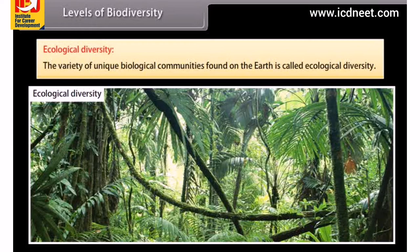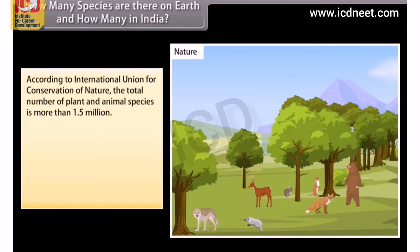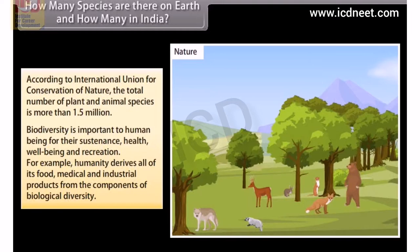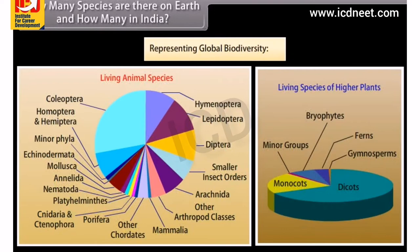How many species are there on earth? According to the International Union for Conservation of Nature, the total number of plant and animal species is more than 1.5 million. Biodiversity is important to human beings for their sustenance, health, well-being and recreation. Humanity derives all of its food, medical and industrial products from the components of biological diversity. Here is a pie graph representing global biodiversity.